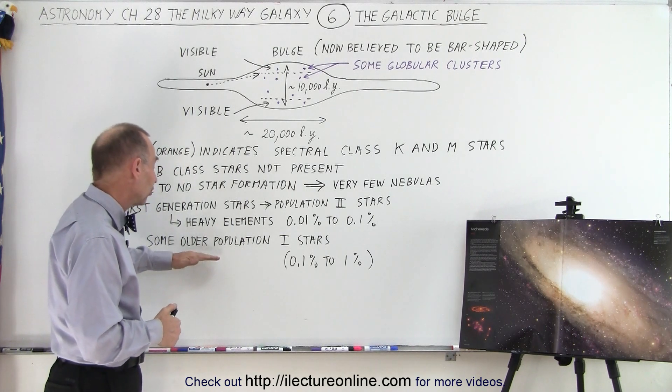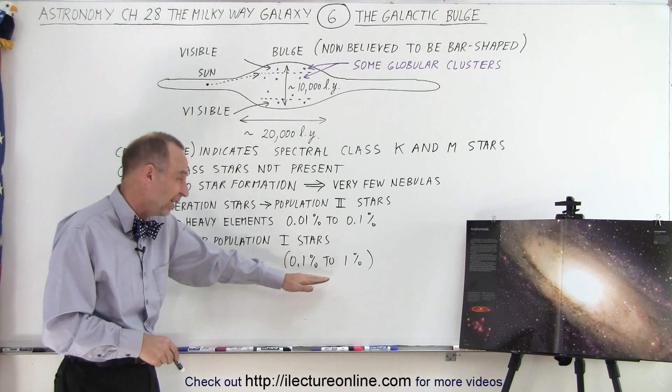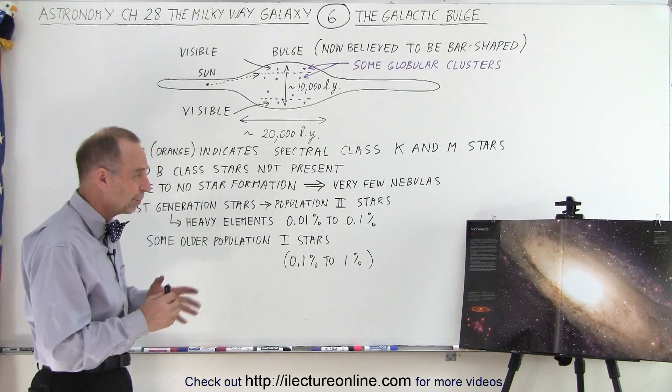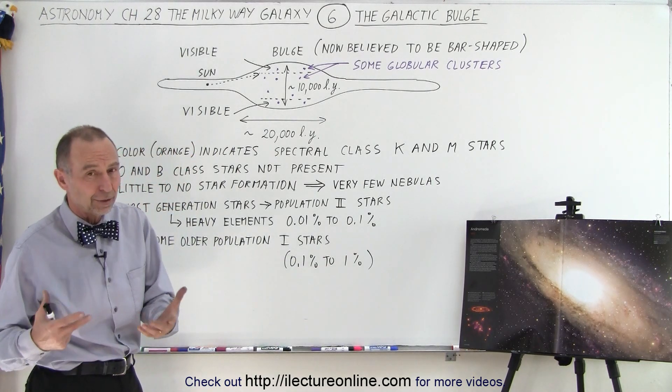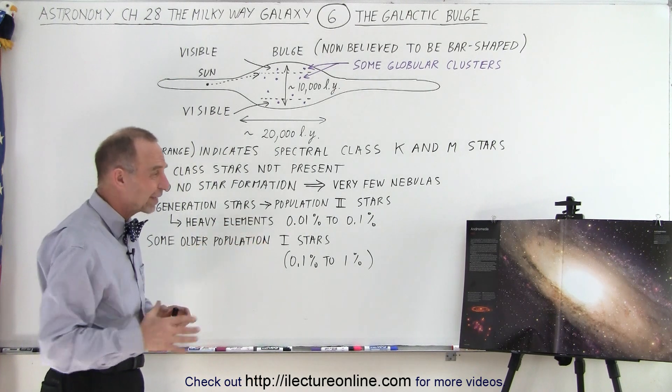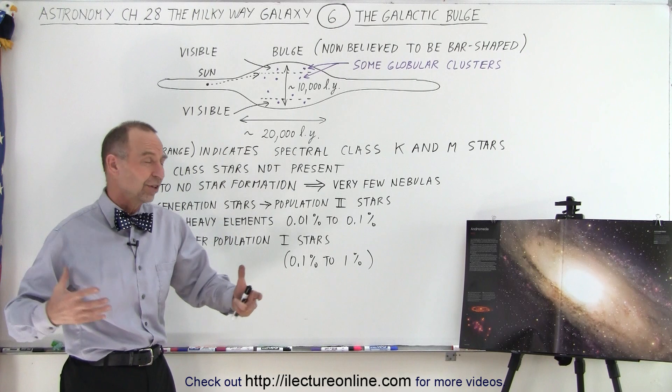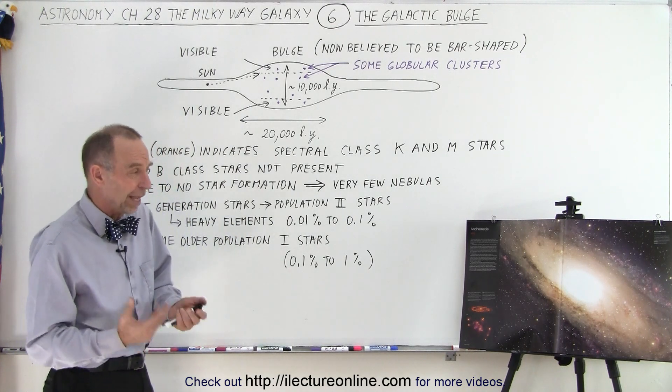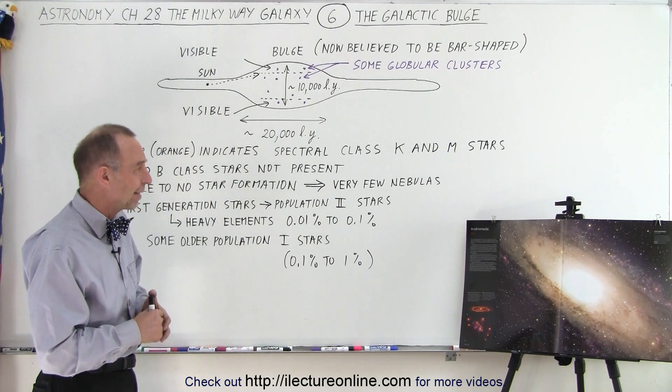Now, the old Population I stars contain heavy elements in the range of about 0.1% to about 1%, although you'll see very few stars in the bulge that have this amount of the heavy elements in it because then it becomes more like a star like our Sun. So the central region of the galaxy, our Milky Way galaxy, is just a region with older stars, not a lot of activity, not new star formation to any appreciable amount. And so the newer-type stars are simply not there.